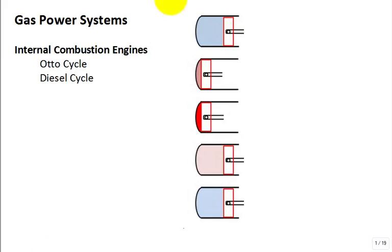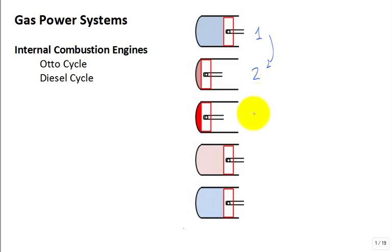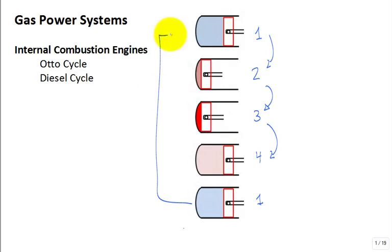We've been talking about internal combustion engines and we've introduced the Otto cycle. The Otto cycle is visually shown here starting at state one, at bottom dead center going to state two — that's a compression stroke, adiabatic compression. Then from two to three you have constant volume heat addition. Then three to four you have adiabatic expansion, and four back to one is constant volume heat rejection.